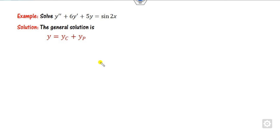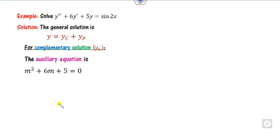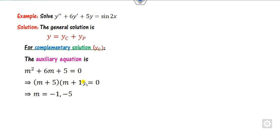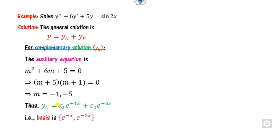The general solution is yc plus yp, where yc is obtained from the homogeneous part by using the auxiliary equation m² + 6m + m. You can easily find the roots, and hence you will get m = −1 and m = −5.